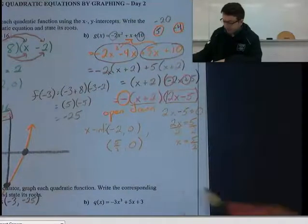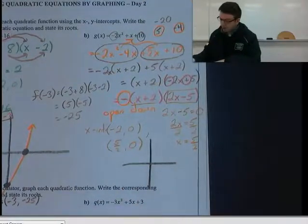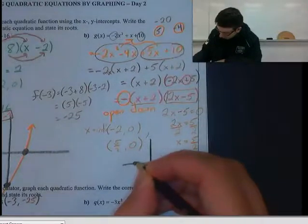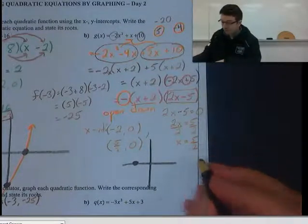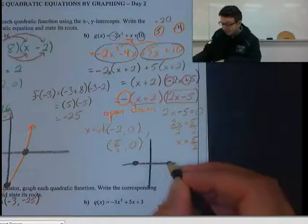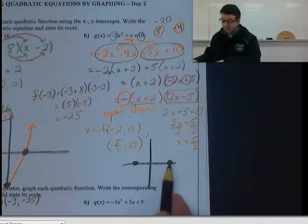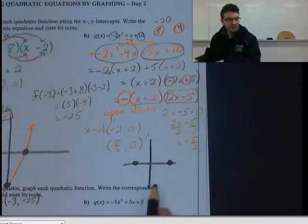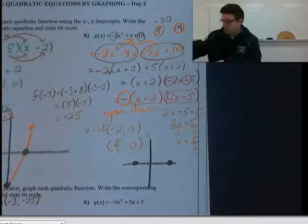So we can do a rough sketch with that. We don't have much room, but I'll still throw it in there. I have our one intercept over here at negative 2. And the other intercept is 5 halves. As a decimal, if you prefer decimals, that's 2.5. So it's just a little bit further away than our other x-intercept. Which means, again, the vertex is not going to be your y-intercept. It's going to be a little bit to the right here. And you can figure out what that is by finding the average of your x-intercepts, which we've done before in our previous lesson.